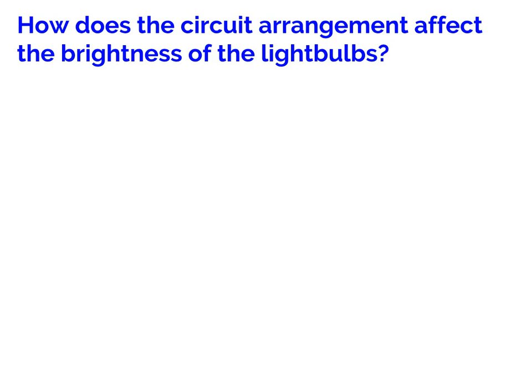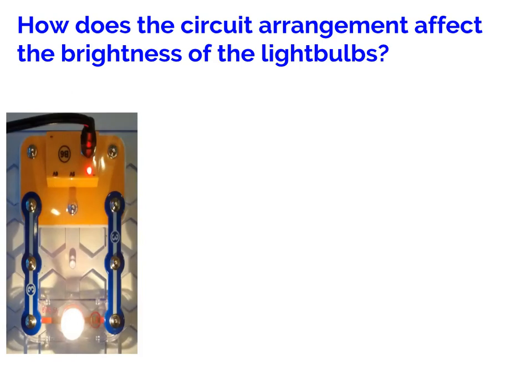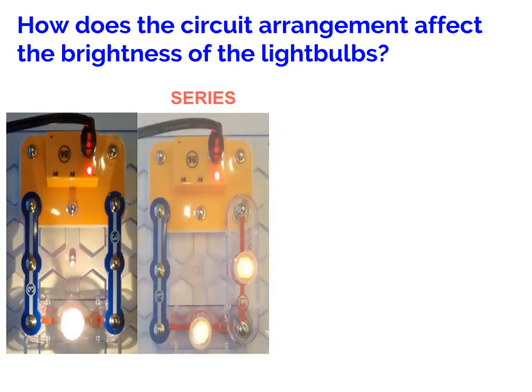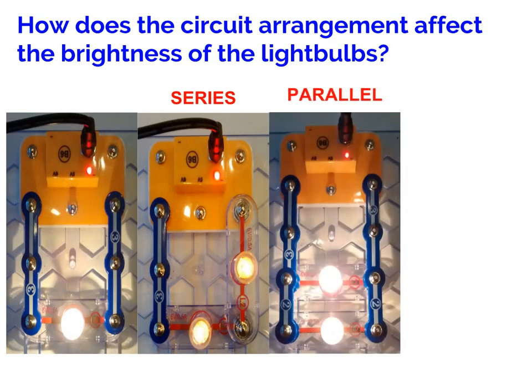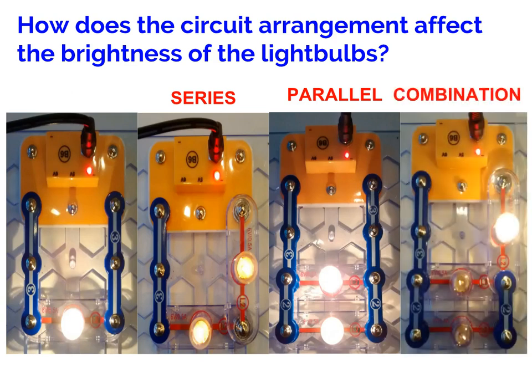Going on to the circuit arrangement, we saw that with a single light bulb we had quite a bright light. Then when we put another light bulb in series they became sort of medium. Then when we had two same light bulbs in parallel they were very very bright. And then finally we saw our combination circuit where mysteriously the parallel light bulbs were dim and the series one got very bright.